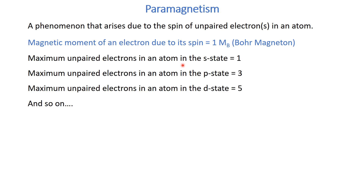We have S, P, D, and F states in an atom. The maximum number of unpaired electrons in the S state is one, because the S state can only accommodate two electrons, so it can only hold one unpaired electron. Similarly, in the P state we have six electrons, so the maximum number of unpaired electrons in the P state could be three.